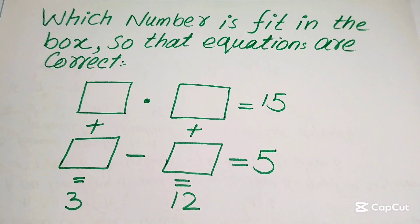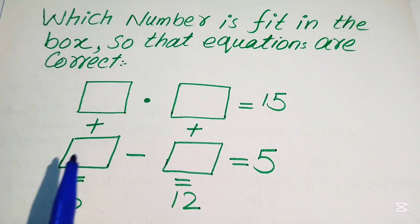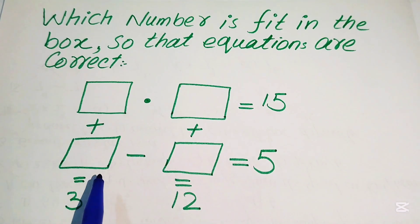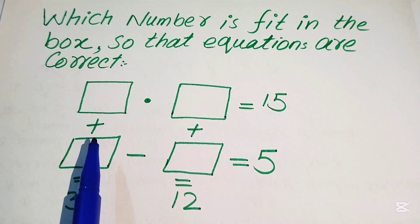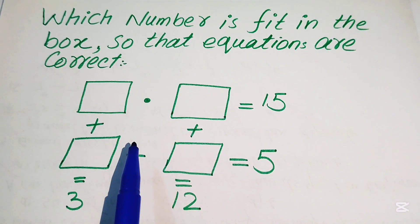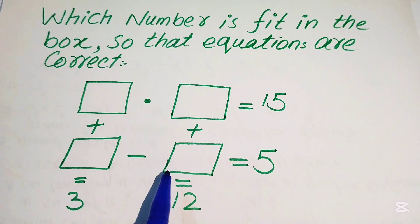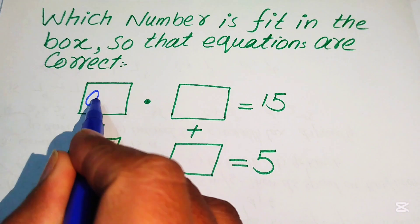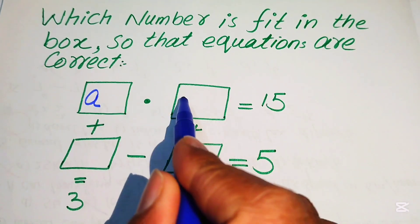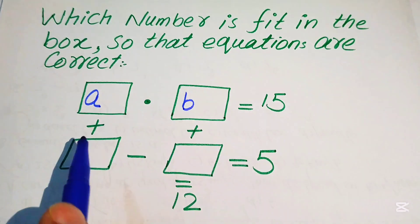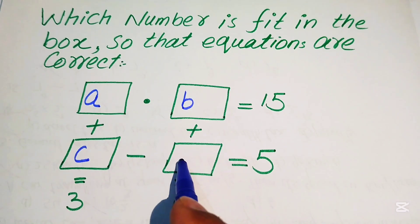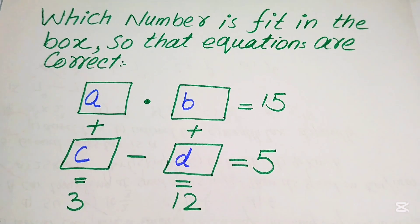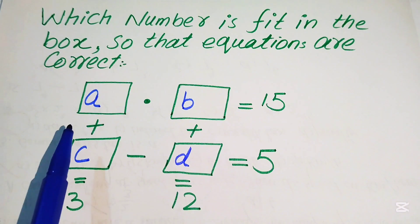Hello everyone. Which number fits in the box so that the equations are correct? You see here we have these four boxes. We suppose that the number in the first box equals A, the second equals B, the third equals C, and the fourth equals D.